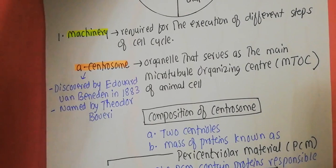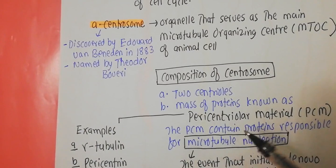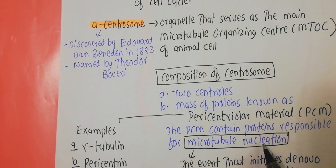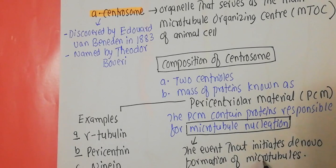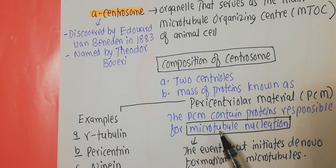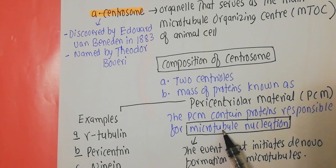The pericentriolar material, or PCM, contains proteins that are responsible for microtubule nucleation. Microtubule nucleation is a phenomenon where the de novo formation of microtubules takes place. Microtubules are made up of tubulin proteins — alpha and beta tubulin. They can exist in a shrunken form and can be elongated, but that is not called nucleation. Microtubule nucleation refers specifically to de novo formation of microtubules — starting from scratch.